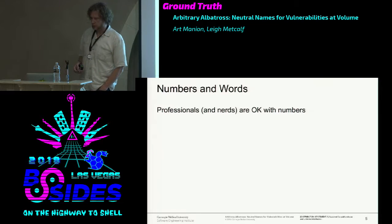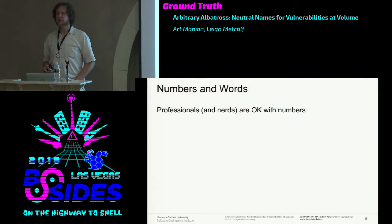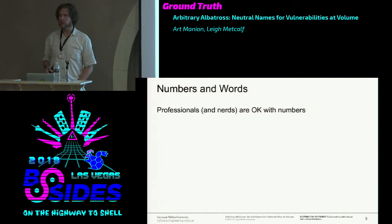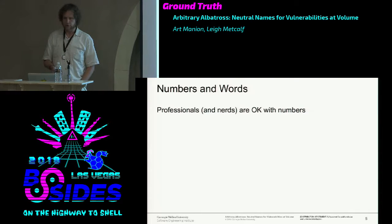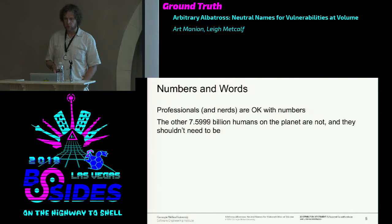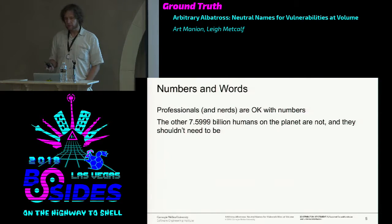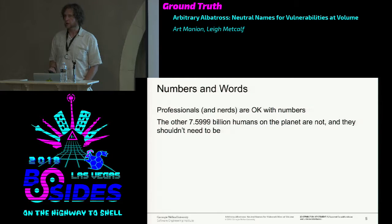We have phone numbers, CVE identifiers, and this idea about words and named vulnerabilities. Professionals in a field have jargon—they're usually okay with numbers and code words, and nerds about vulnerabilities are okay with code words. The rest of the planet really doesn't know what you're talking about, and they shouldn't have to.